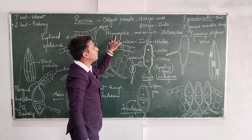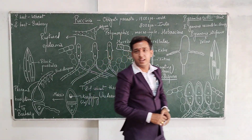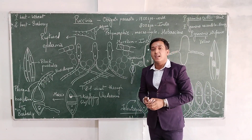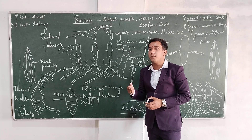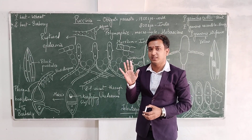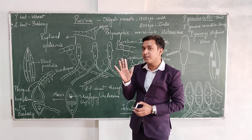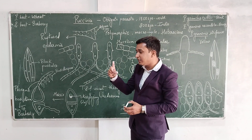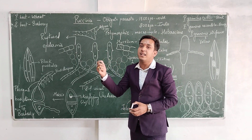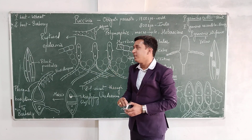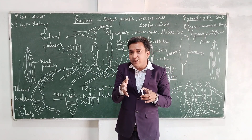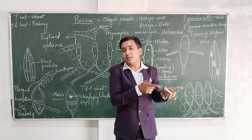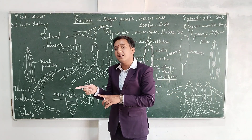Puccinia is also a polymorphic and microcyclic fungus. Microcyclic and polymorphic means that during its life cycle it forms five types of spores. All five types of spores are either uninucleate or binucleate. So among the five types of spores, some spores are uninucleate and some spores are binucleate.